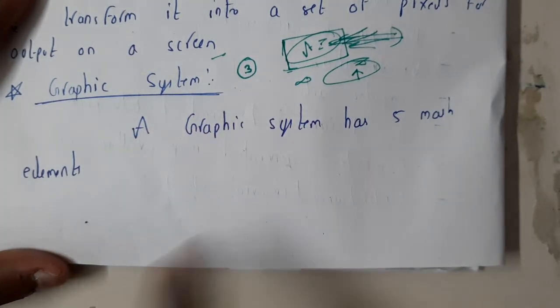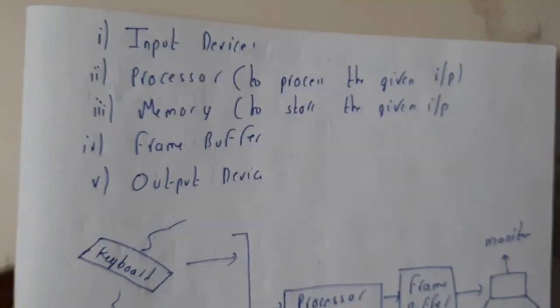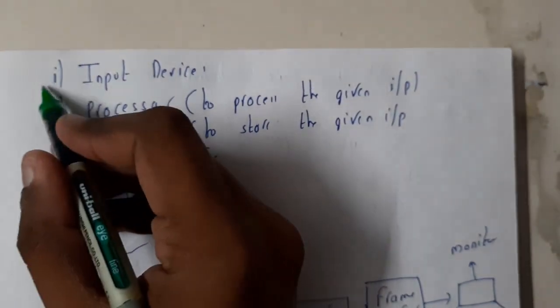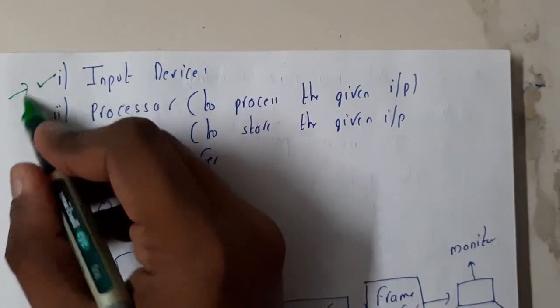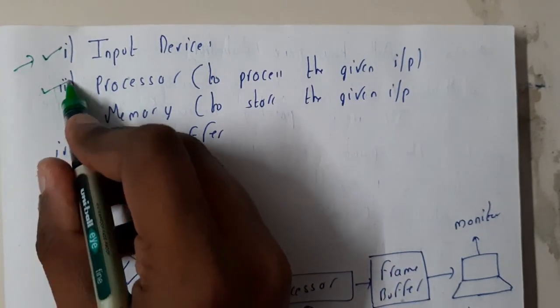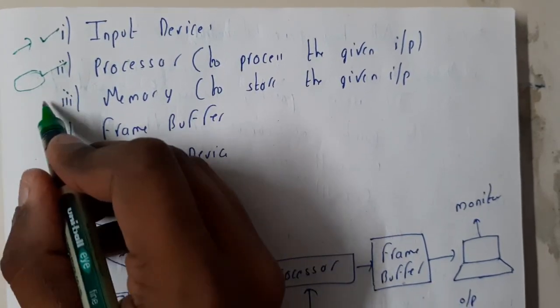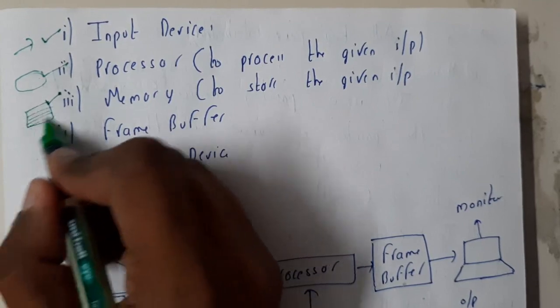It is having five main elements, so we'll be going through them. The first element will be your input device through which you give input, and the second will be your processor which processes the given input. Memory is the place where you store your particular data which you are trying to enter.